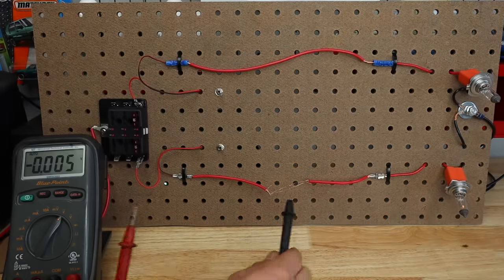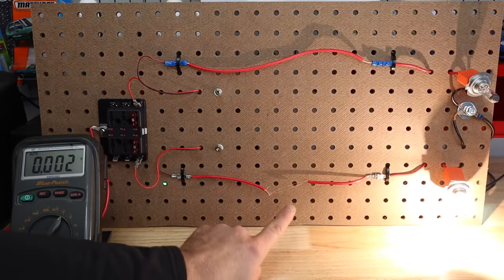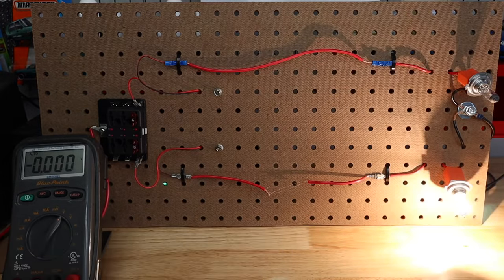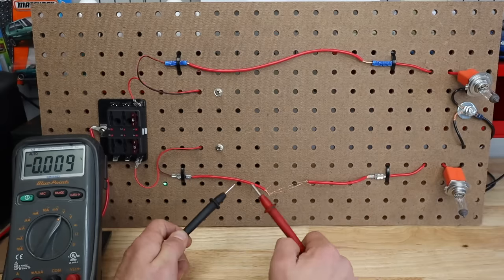Now while that seemingly operates that bulb just fine, it's only a matter of time and heat cycling and movement before this wire will probably break. We can also leave it on long enough and it'll get hot enough where it'll separate that way.